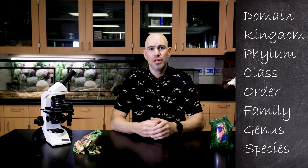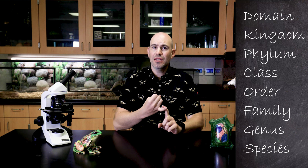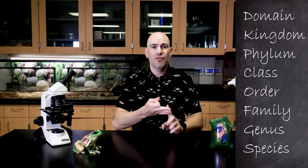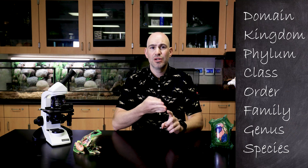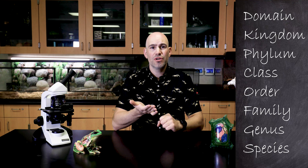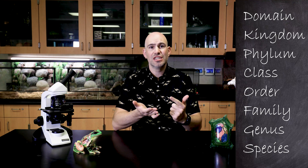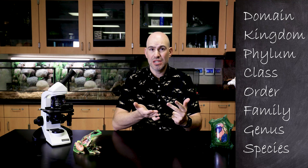Hello science people. In science, we use taxonomy in order to name living things. We use eight taxonomical groups: domain, kingdom, phylum, class, order, family, genus, and species.